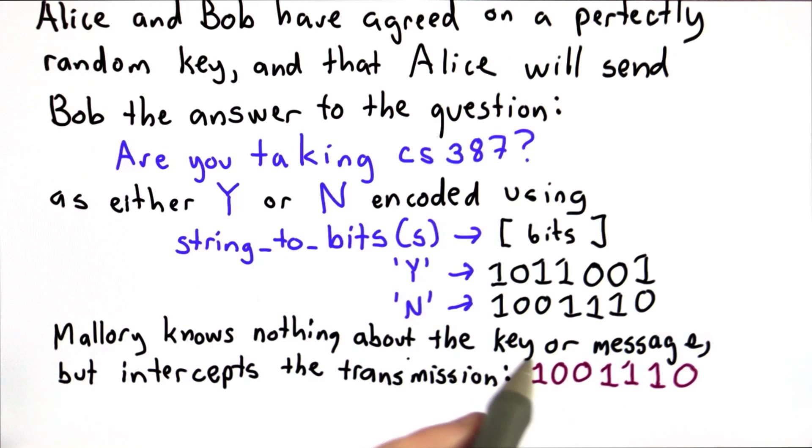Mallory knows nothing about the key or the message, but she intercepts the transmission between Alice and Bob and intercepts this sequence of bits.